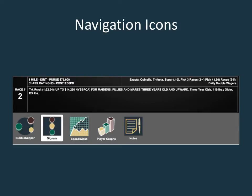Navigation within a race is easy. Clicking on any of the five main navigation icons will take you to the information screen for that category. We will go over each category in this tutorial, starting with the bubble capper and ending with notes.